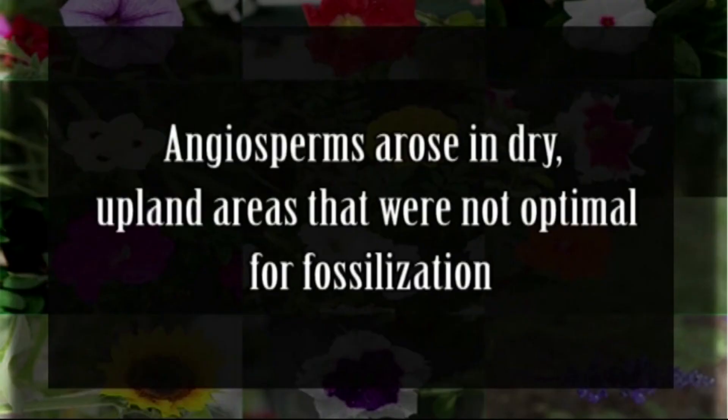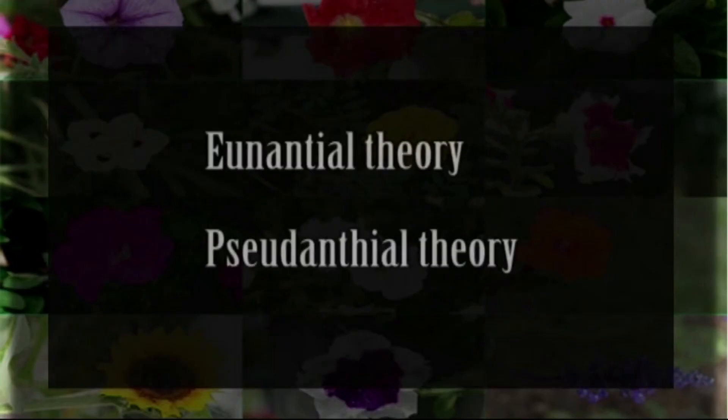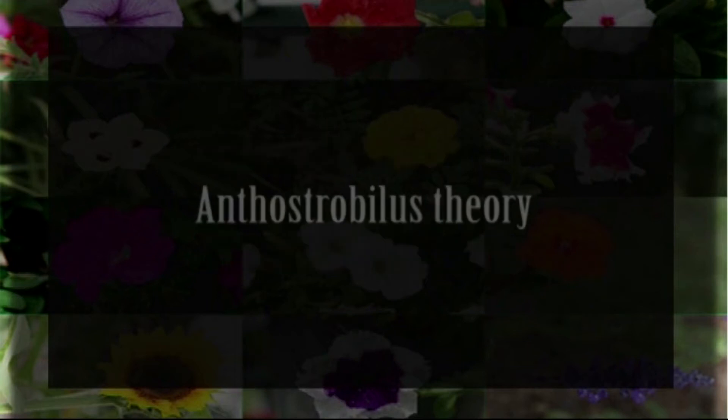The lack of fossils was attributed to the thought that angiosperms arose in dry upland areas that were not optimal for fossilization. Since Darwin's time, many advances have been made including new fossils and lots of molecular data aimed at resolving this mystery. Many theories and hypotheses have been proposed, and most have revolved around two basic theories: the Euanthial Theory and the Pseudanthial Theory.